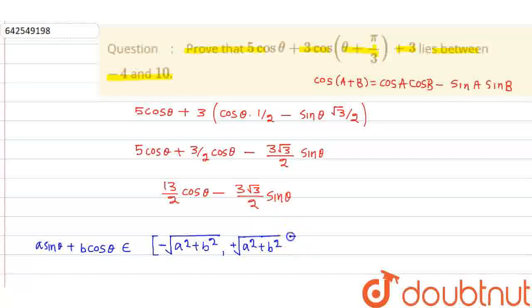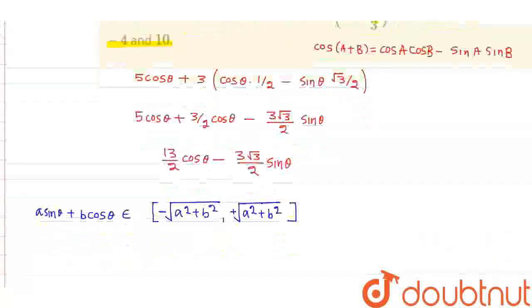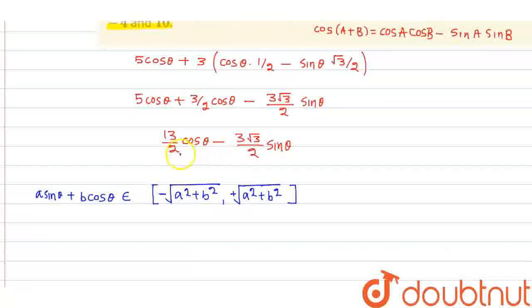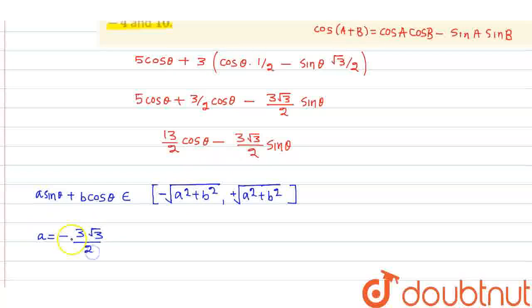Here we can clearly see that a = −3√3/2 and b = 13/2. So basically the range of this thing goes from −√(a² + b²) to +√(a² + b²).